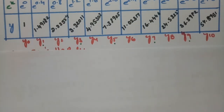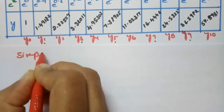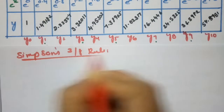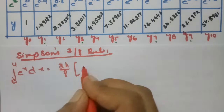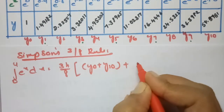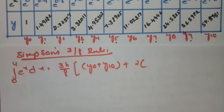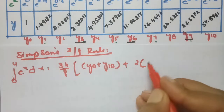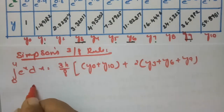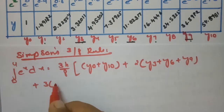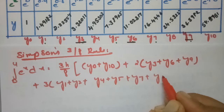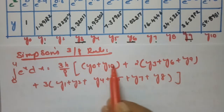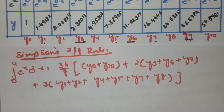Now coming to Simpson's 3/8 rule. According to the 3/8 rule, the formula for the integral from 0 to 4 of e^x dx is equal to 3h/8 times [first value plus last value (y0 + y10), plus 2 times the multiples-of-3 indexed values (y3, y6, y9), plus 3 times the rest of the values (y1, y2, y4, y5, y7, y8)]. Total 11 ordinates.